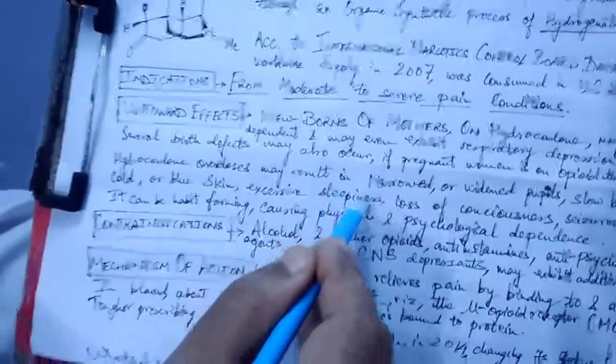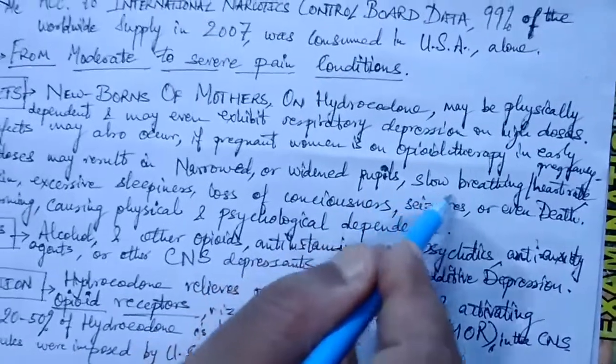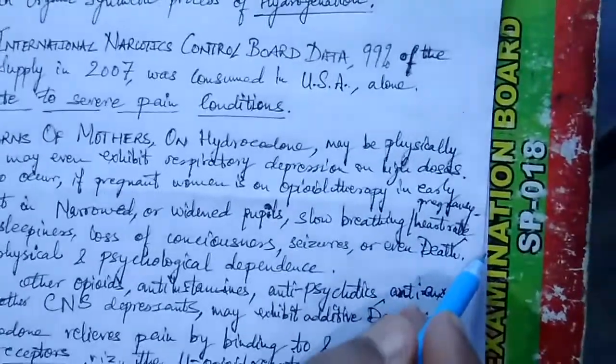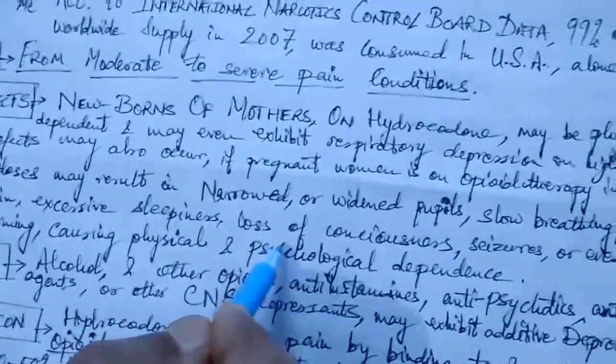Hydrocodone overdoses may result in narrowed or widened pupils, slow breathing and heart rates, cold or blue skin, excessive sleepiness, loss of consciousness, seizures, or even death.